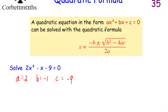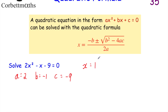Now we're going to substitute those values into the quadratic formula and find our values for x. So x equals negative b — now b is equal to negative 1, so negative b is minus minus 1, which is just 1. Then we've got plus or minus, and then the square root of b squared, which is minus 1 in brackets, squared, minus...